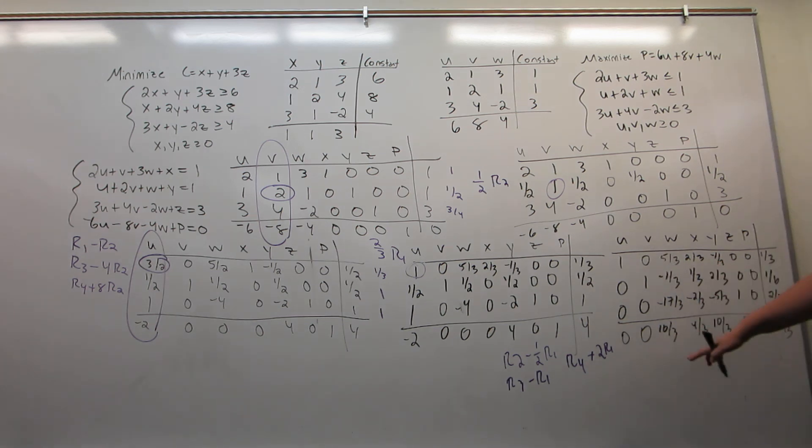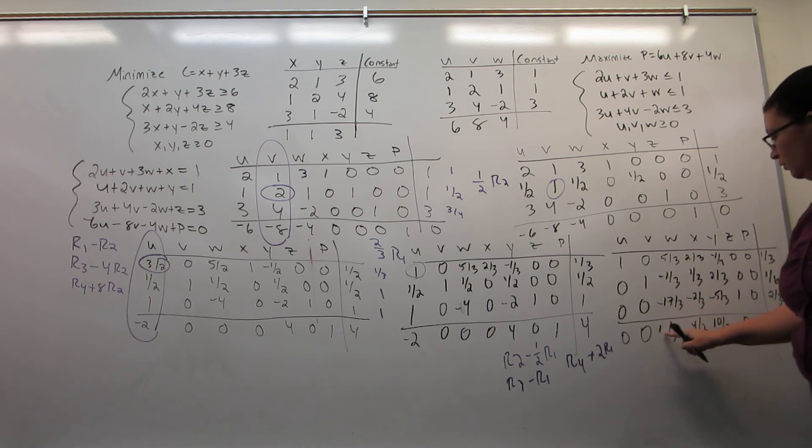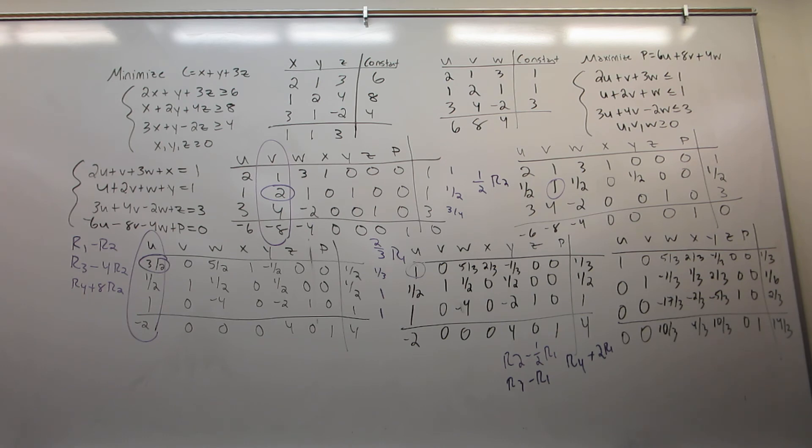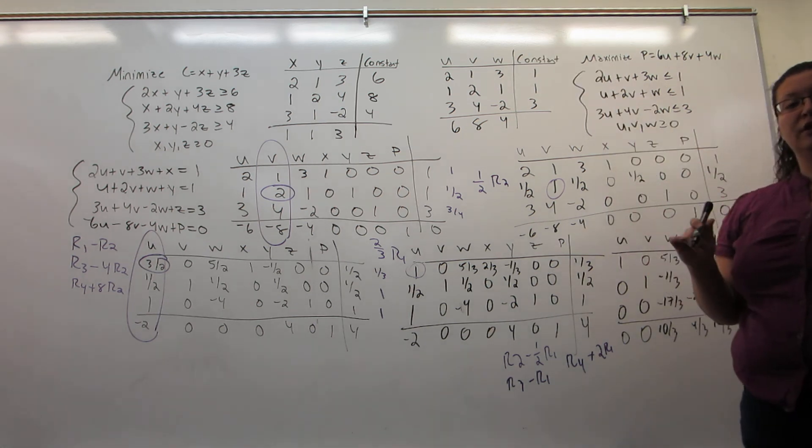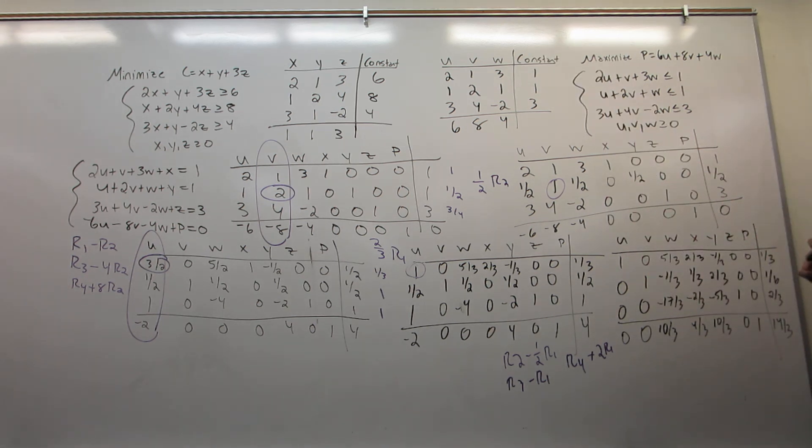Now, I know I'm done because there are no more negative numbers in the bottom. And from here, I can read off the answer. Now, I'm not reading off the answer to this problem, meaning I'm not looking at unit columns and coming over here to the right-hand side. Instead, I'm going to read off the answers to the original problem, and I do those a little bit differently.